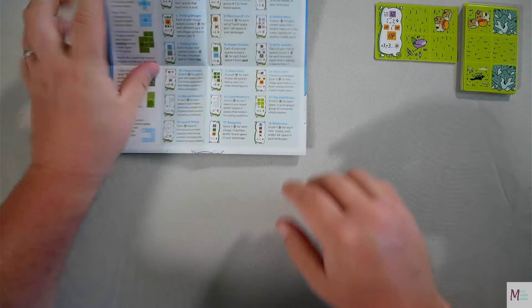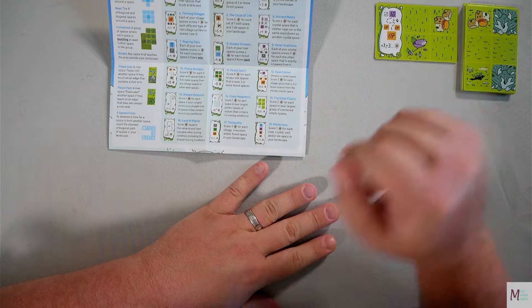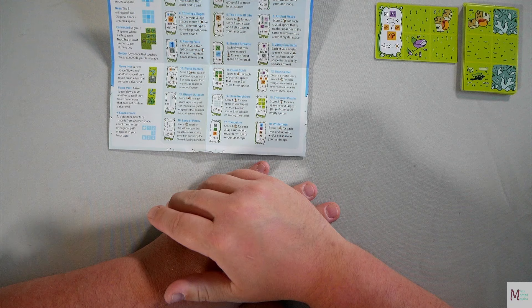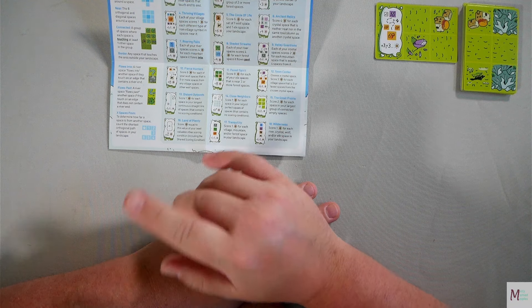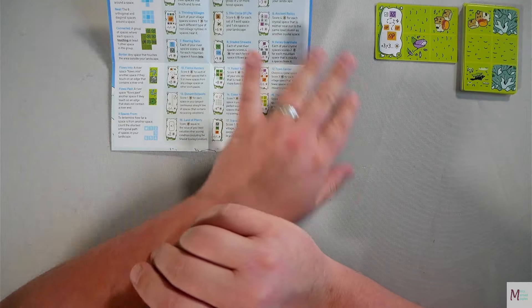That one is Town Center. Choose a crystal space, score three points for each village space that is three or fewer spaces from the chosen crystal. There we go, so that's that one.